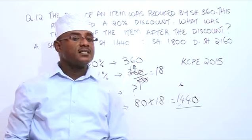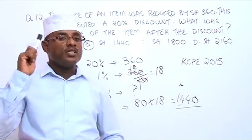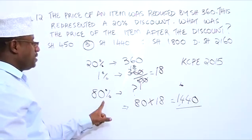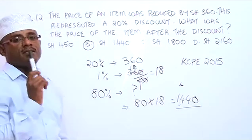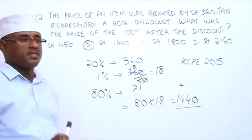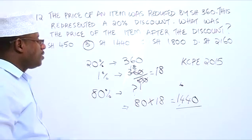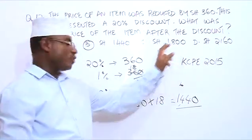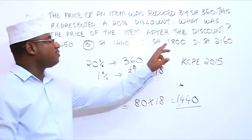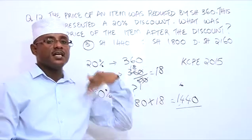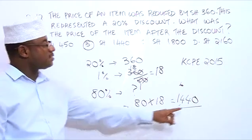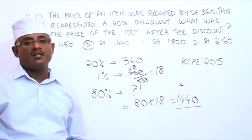If the question was asking for the original price before the discount, instead of using 80% we would use 100%, because the price before the discount is 100%. The answer would then be 100 multiplied by 18, which gives us 1,800. But in this case the question asks for the price after the discount, which is 80%, and that is 1,440.